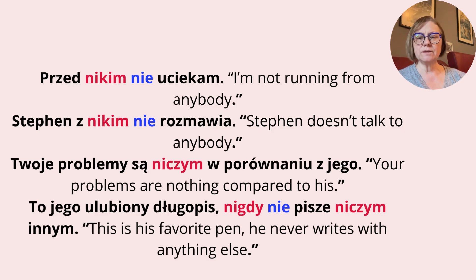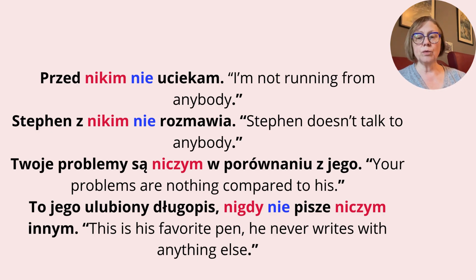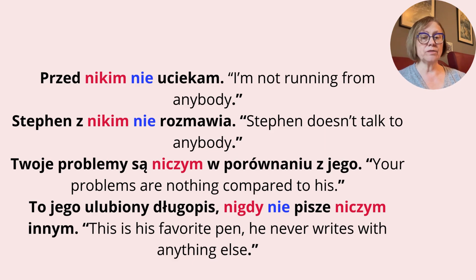Stephen z nikim nie rozmawia. — Stephen doesn't talk to anybody. Twoje problemy są niczym w porównaniu z jego. — Your problems are nothing compared to his. To jego ulubiony długopis. Nigdy nie pisze niczym innym. — This is his favourite pen. He never writes with anything else.